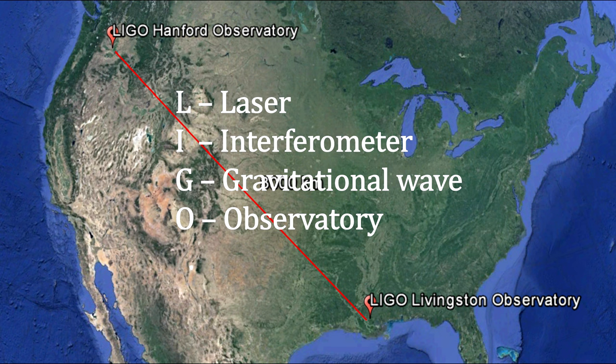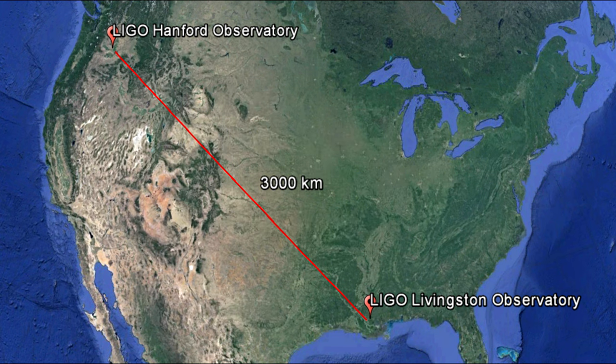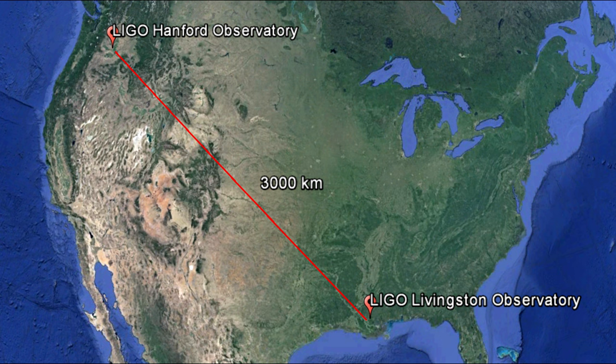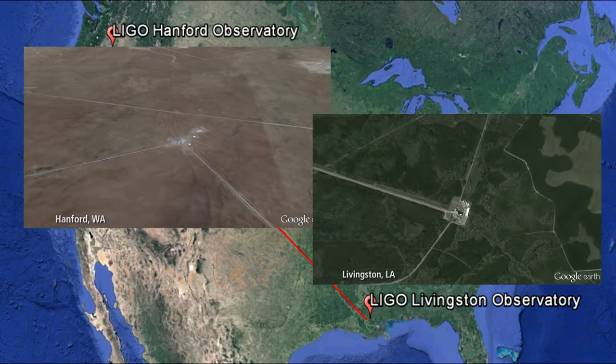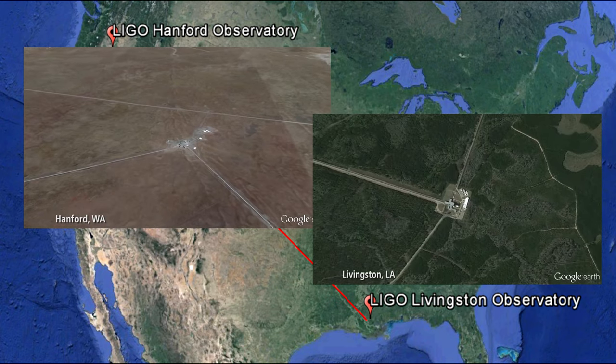Today we have LIGO, the Laser Interferometer Gravitational Wave Observatory. In 2015, it started with two identical interferometers, 3,000 kilometers apart. That's 1,864 miles, with one near Hartford, Washington, and the other near Livingston, Louisiana.